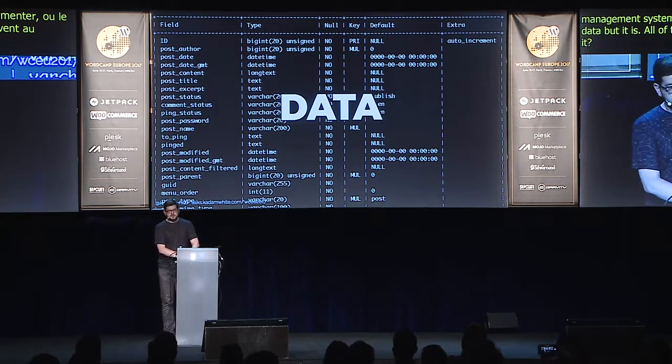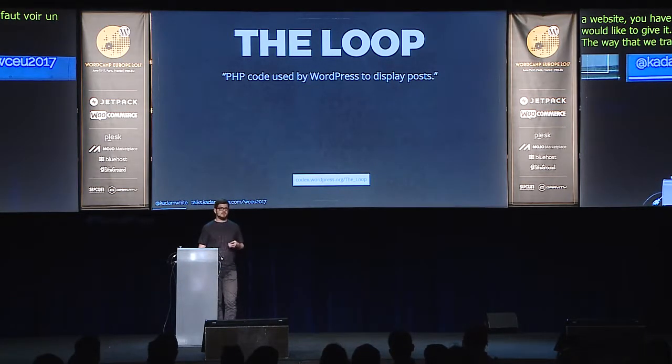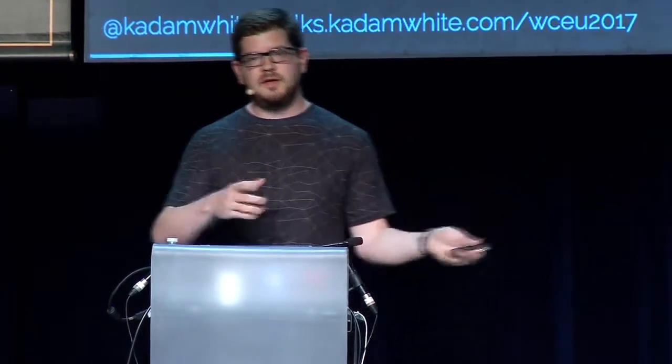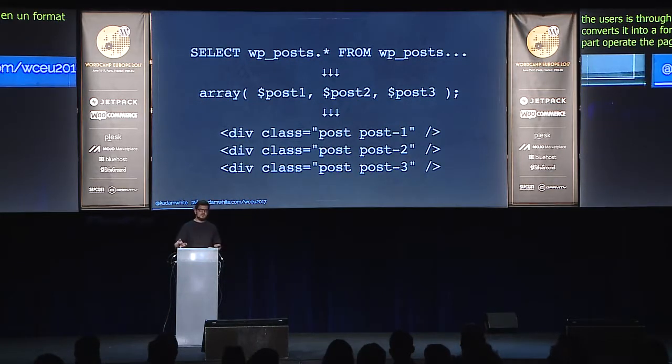In order to do data visualization, you have to have some sort of information and a desired picture you would like to draw with it. In WordPress, in order to have a website, you have some sort of information and a desired presentation you would like to give it. The way that we traditionally take data out of WordPress and put it in front of users is through PHP and through the loop — PHP code that takes information from the SQL database and converts it into HTML. Every webpage driven by a database can be thought of as a data-driven document — a phrase we'll return to.